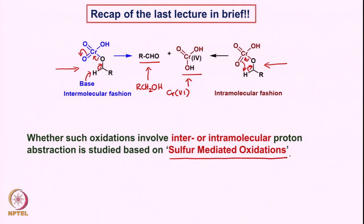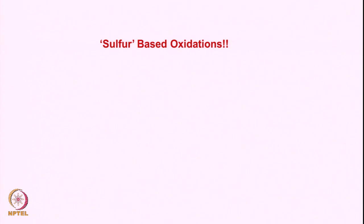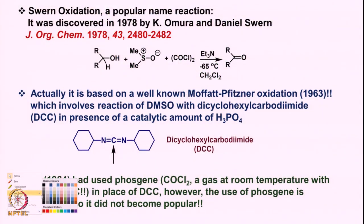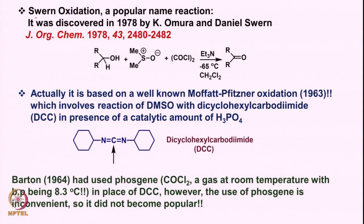We now look at sulfur-mediated oxidations. One of the most important and very popular oxidations involving sulfur-based intermediates is Swern oxidation. In the Swern oxidation, DMSO — dimethyl sulfoxide — reacts with oxalyl chloride, which is the acid halide from oxalic acid.